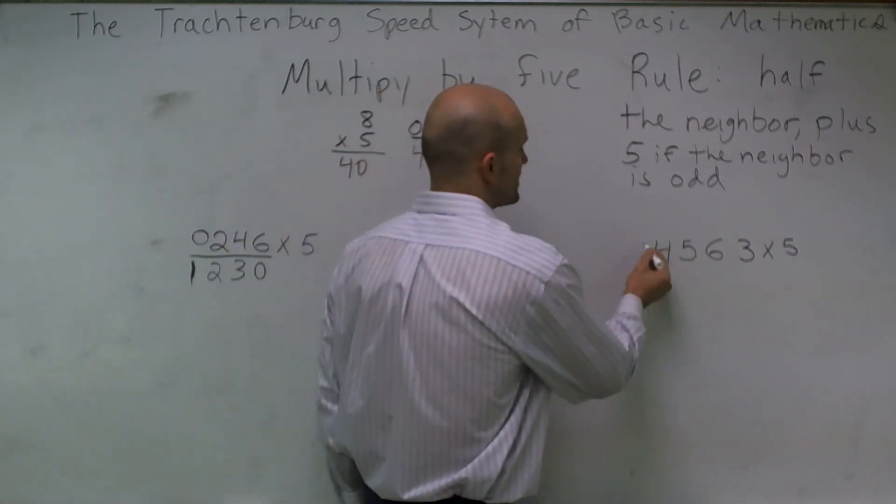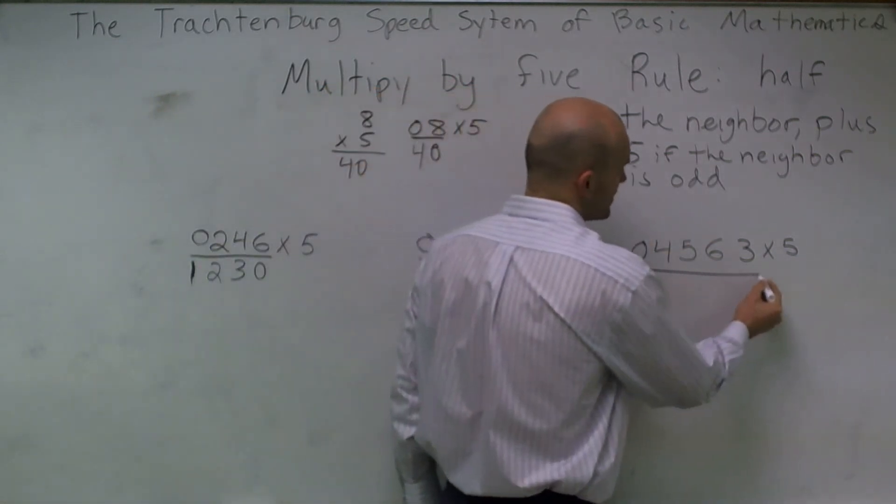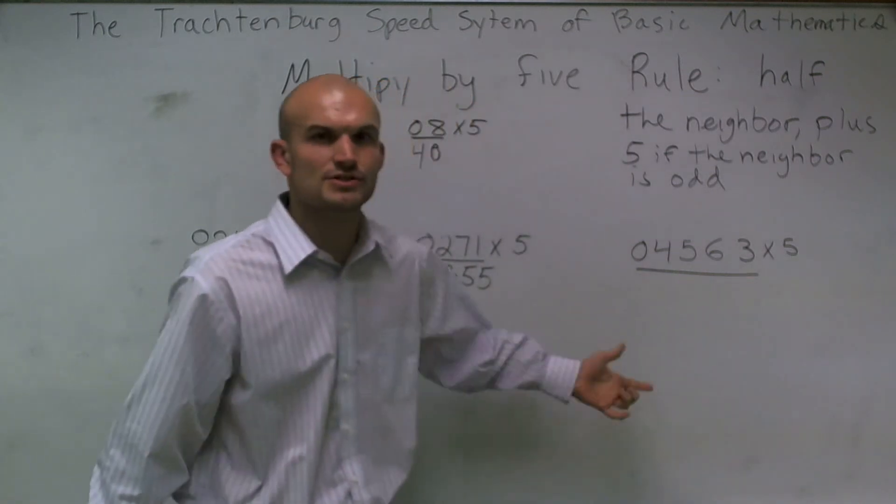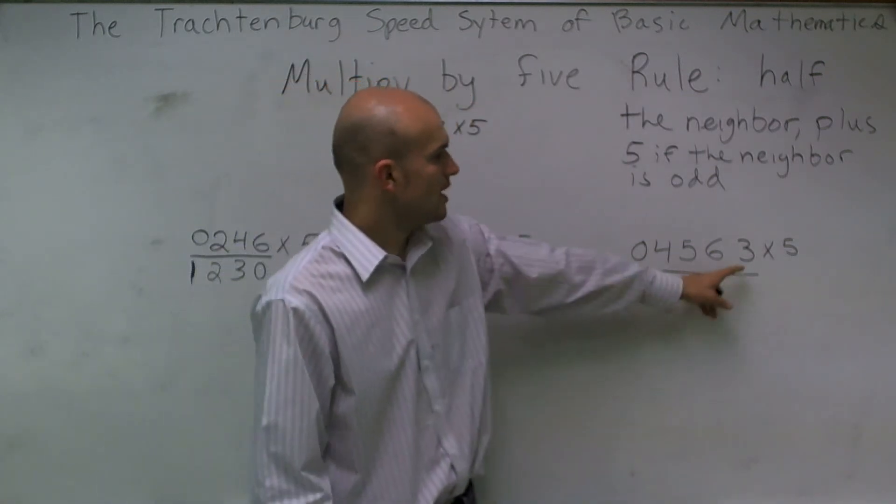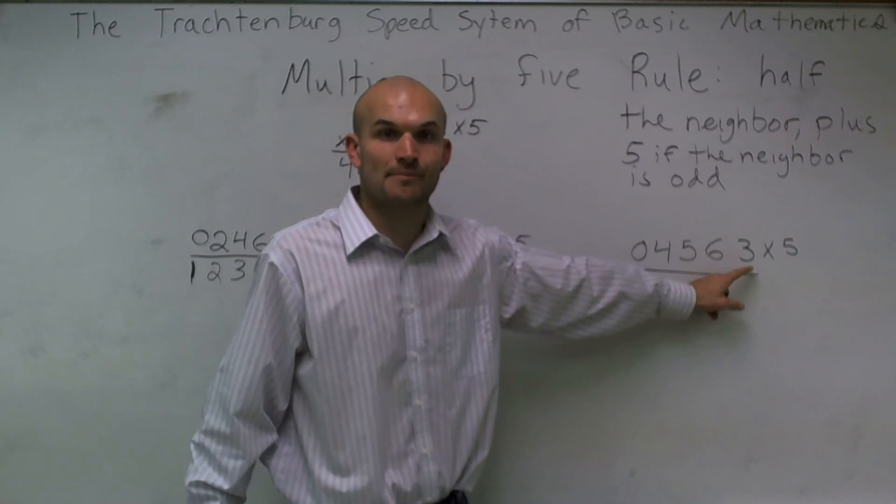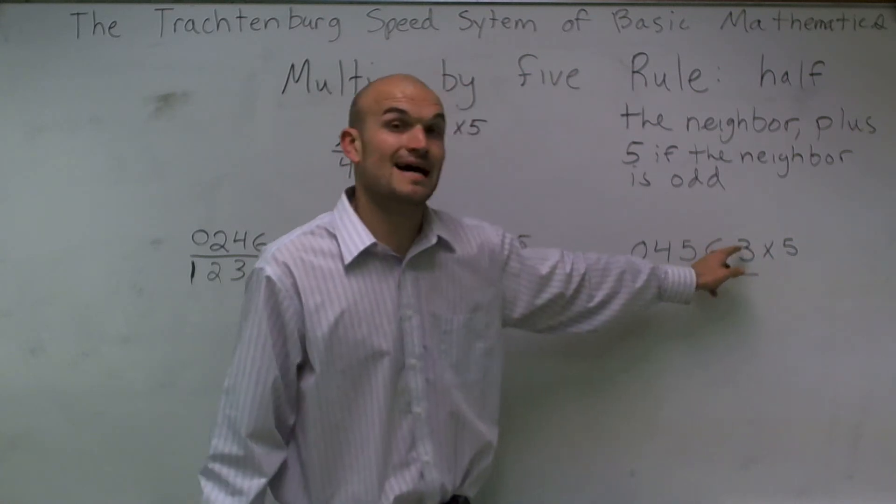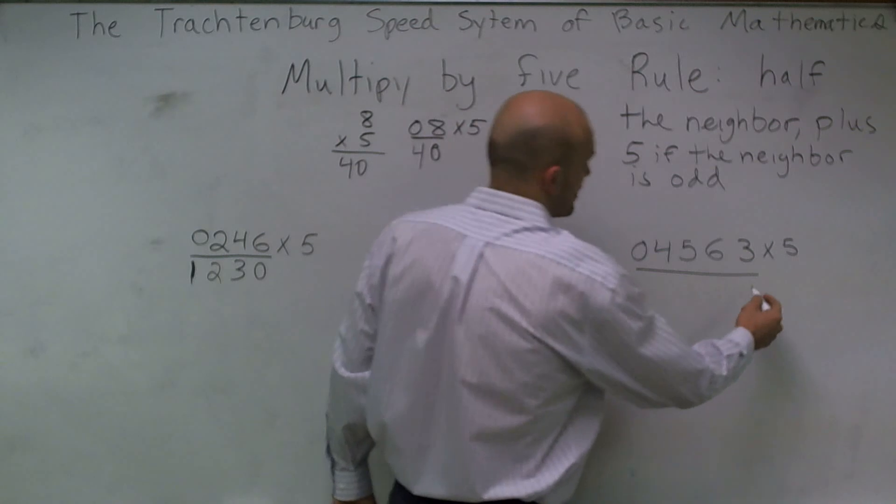Lastly, let's work to this last one. Again, you're going to want to make sure you put a 0 in front and we'll underline. We just do this so we can write our answer below. I notice half of my neighbor for 3, remember, the first one is always 0. Since this is odd, though, we're going to add 5, so I'll have 5.